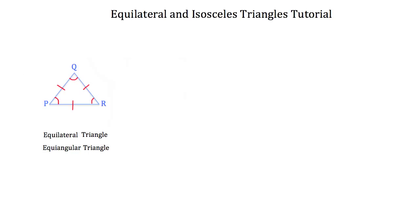Now another important triangle would be the isosceles triangle. An isosceles triangle is a triangle that has two congruent sides, and by having two congruent sides it also has two congruent angles.